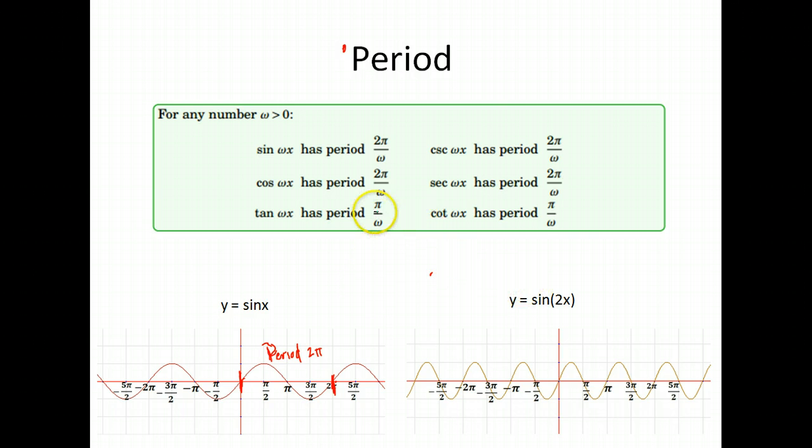So this letter right here means omega. Notice it says if you have, instead of just sin(x), you have sin(ωx), which means you have something multiplied by the x in your sine. That is going to change your period. It will no longer just be 2π. It will be 2π divided by that number.